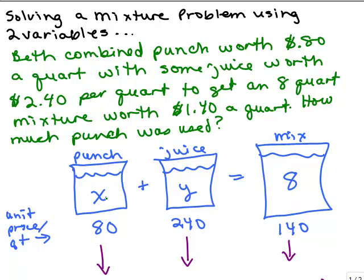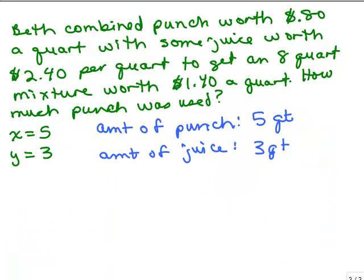X was the amount of punch, y was the amount of juice. So, now we're going to see if that makes sense given the original problem. So x was 5 and y was 3. Here was the original problem and x stood for how much punch we used. So, we've got 5 quarts of punch and y stood for how much juice, so we have 3 quarts of juice. The question says how much punch was used. So, our answer looks like it's going to be 5 quarts.